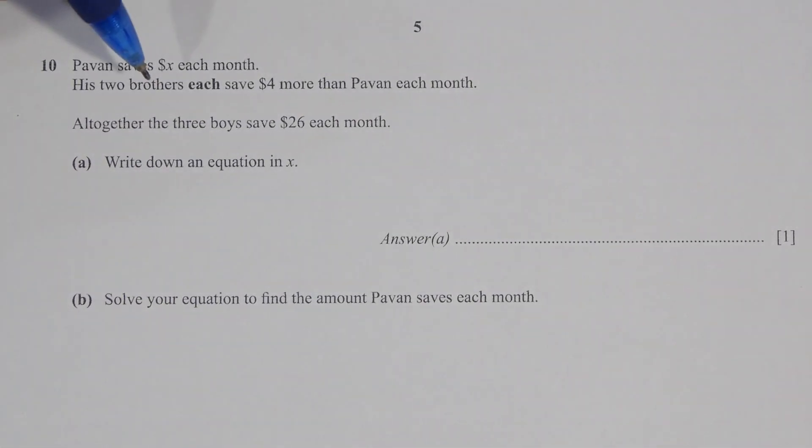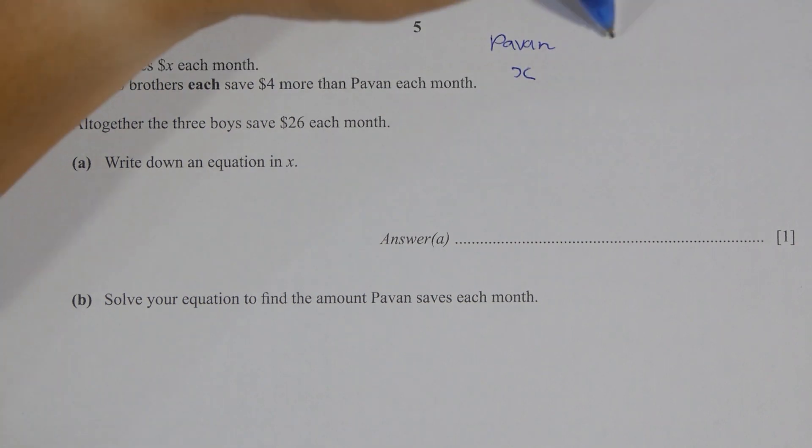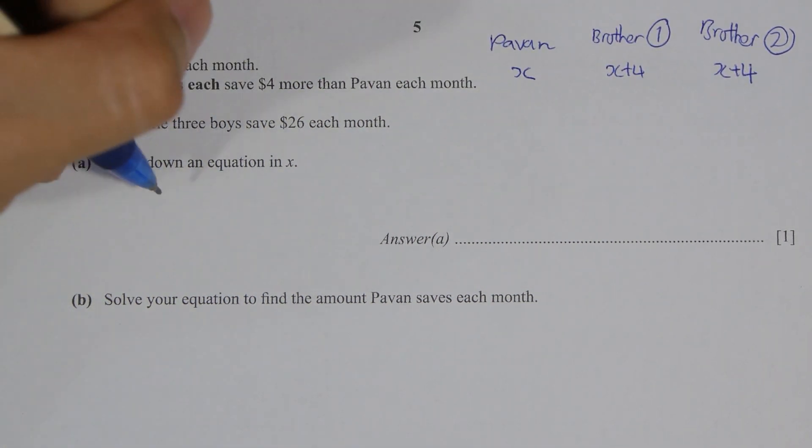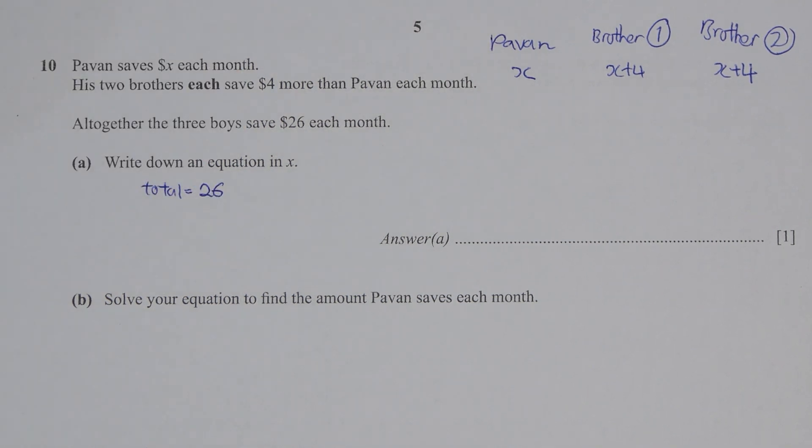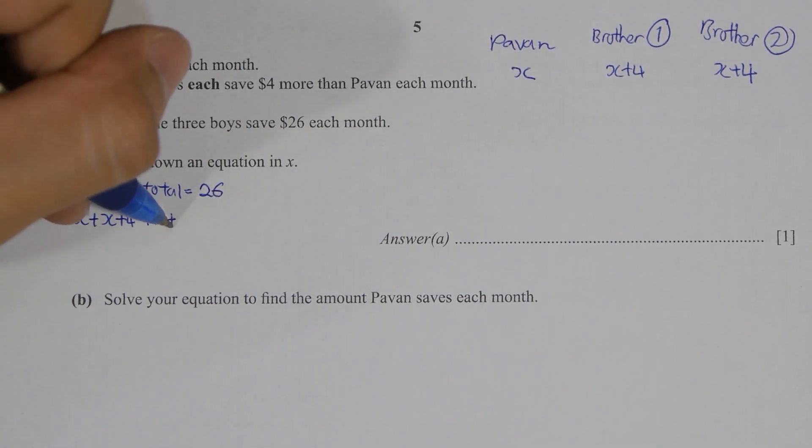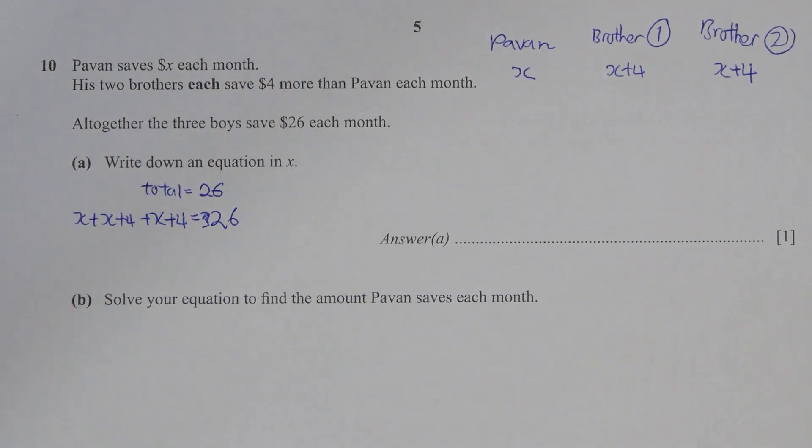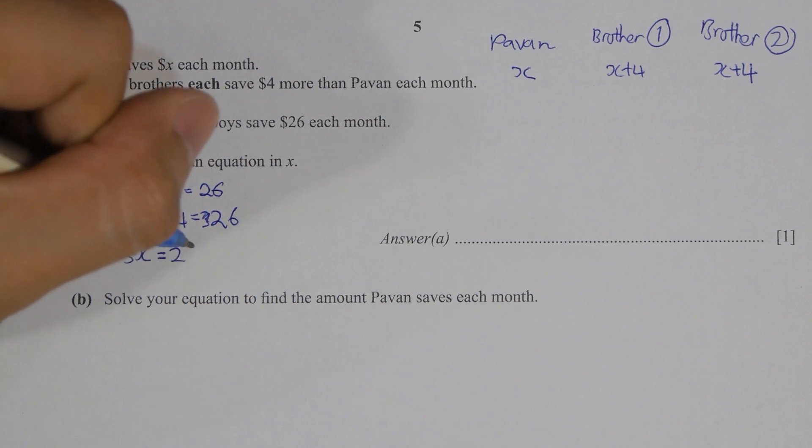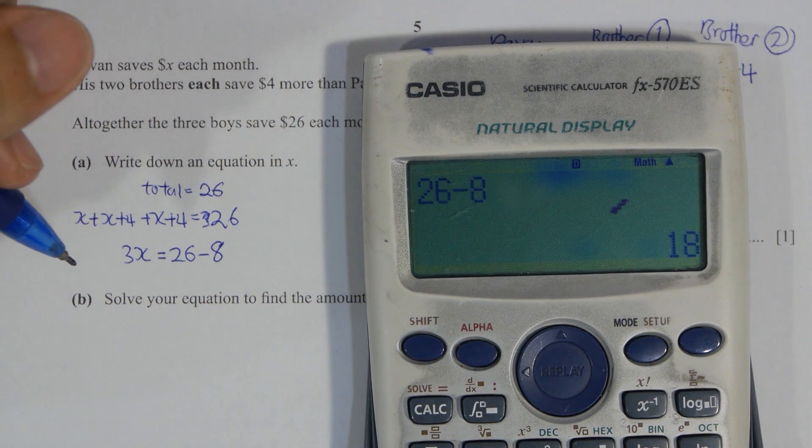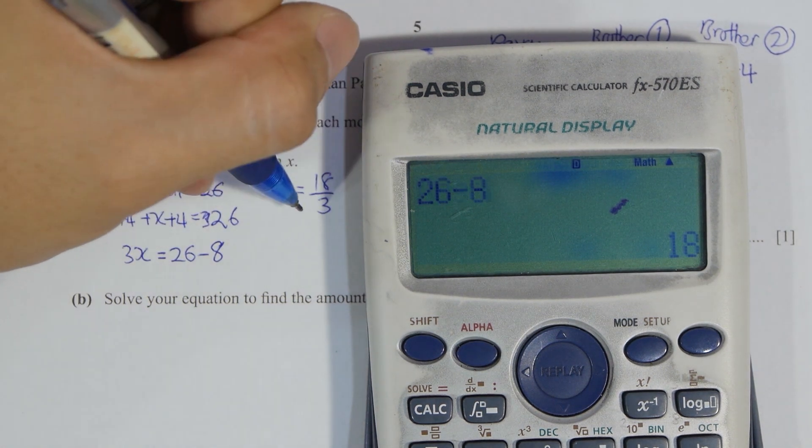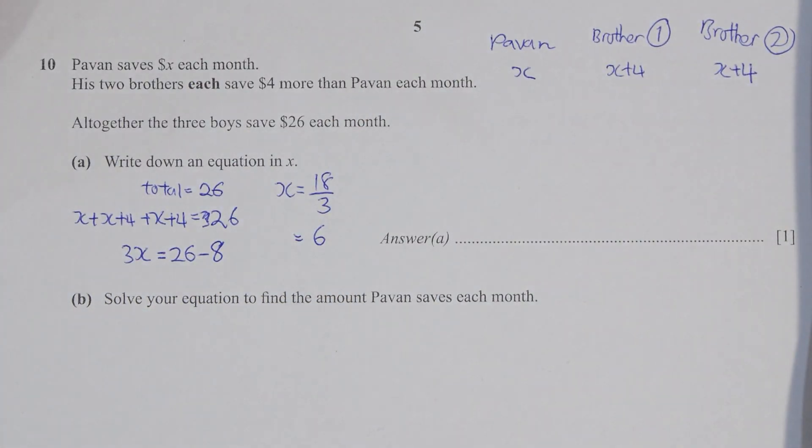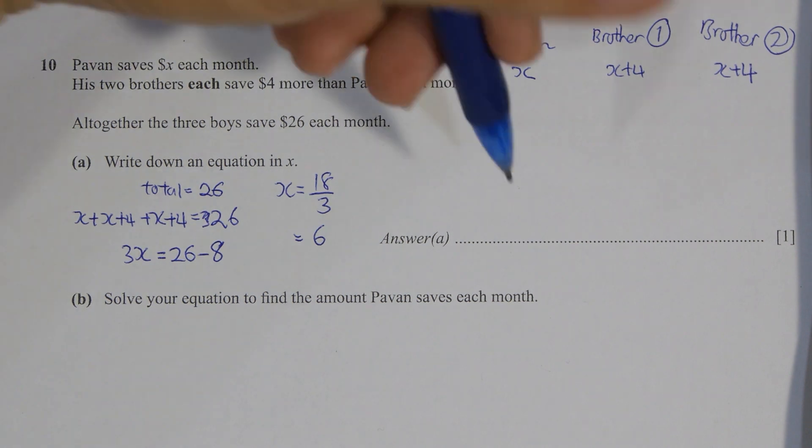Question ten. For this type of question, I usually construct a graph to show the current stats. Parven is x, so brother number one saves more than Parven by four every month so x plus four, same goes to brother two. All together they have 26, so x plus x plus four plus x plus four equals to 26, so x will actually be equivalent to 6 after you run the calculation. To write down the equation in x is actually 3x plus 8 equals to 26.